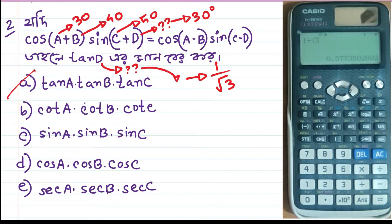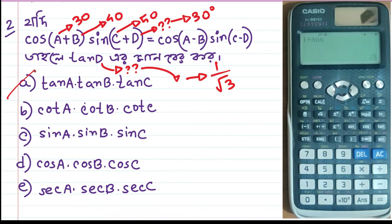If you have tan a, tan b, tan c, then you will have tan a · tan b · tan c, then you will have tan a plus tan b plus tan c. So if you use the same identity approach, then you will have tan a, tan b, tan c combined.